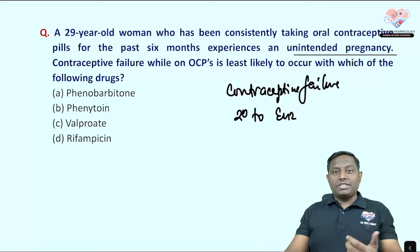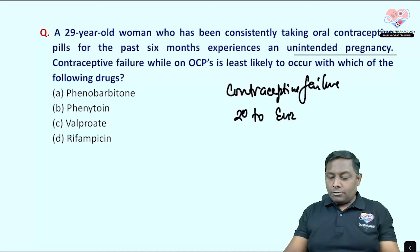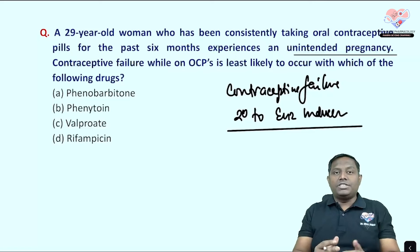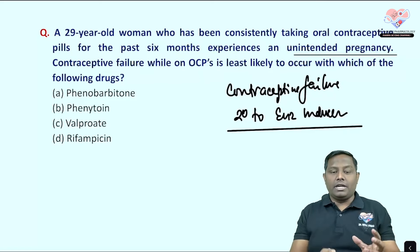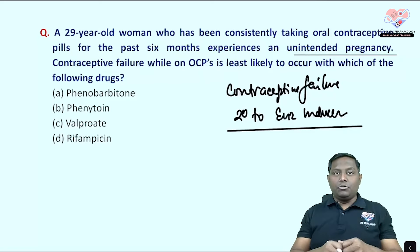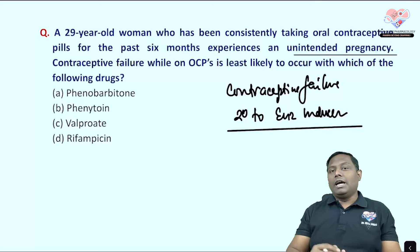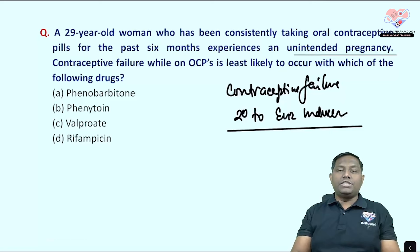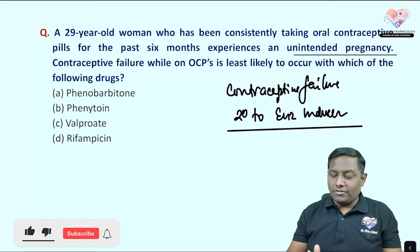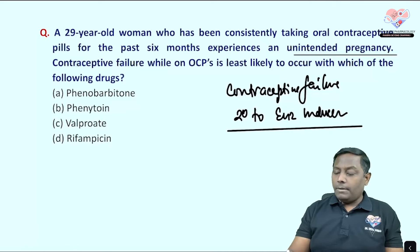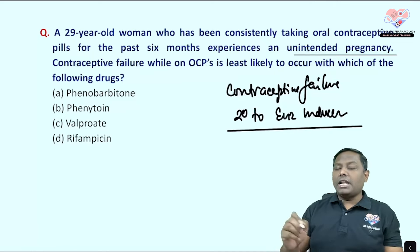Contraceptive failure occurs secondary to enzyme inducers. Enzyme inducers increase the metabolism of the oral contraceptive pill, leading to failure. Conversely, enzyme inhibitors cause toxicity by reducing metabolism.